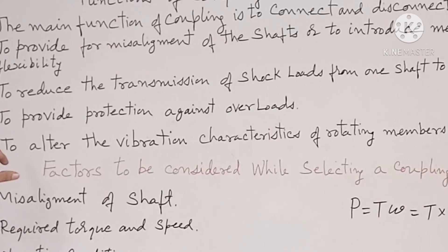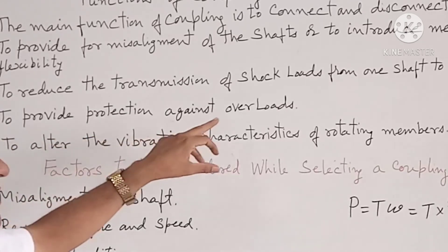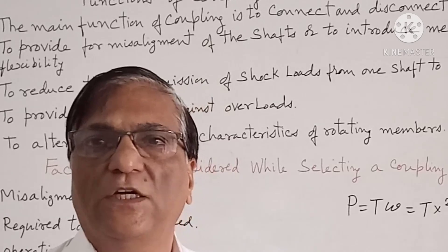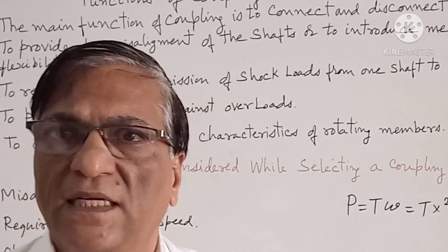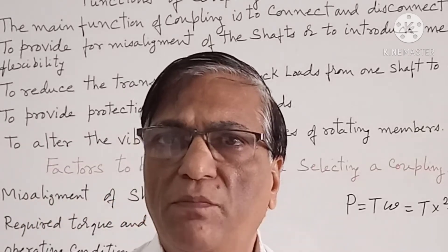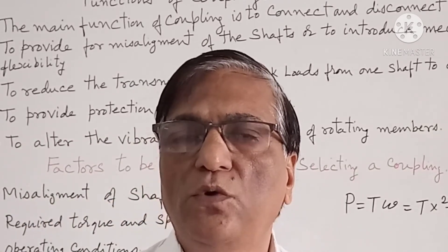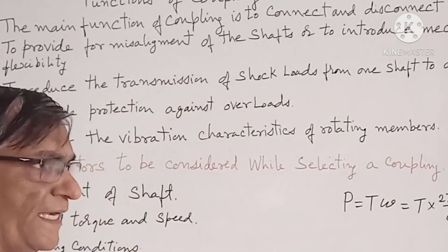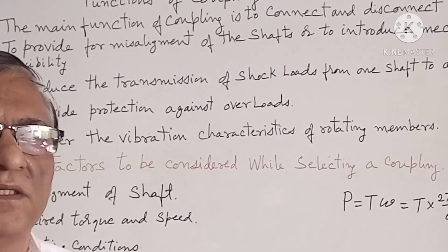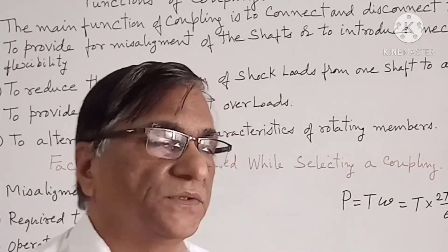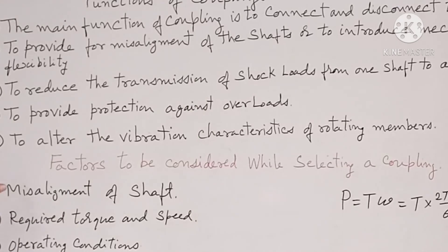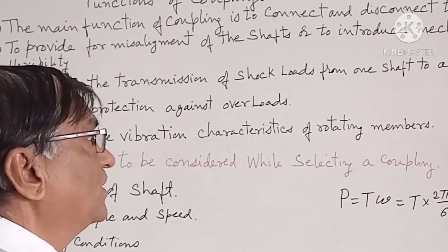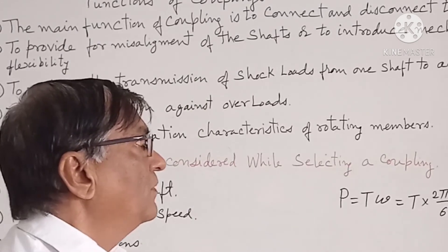Next, to provide protection against overload. Suppose a coupling is designed for 1 kilowatt — then it should be capable of taking 1.2 kilowatt. It should be able to handle certain overloads. Next, to alter the vibration characteristics of rotating members.